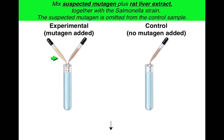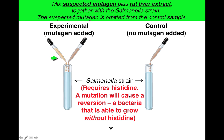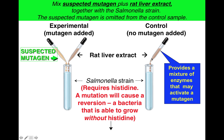This is the test. You start with a strain of salmonella, a bacteria that requires histidine for growth. You mix your suspected mutagen plus a rat liver extract together with the salmonella in a test tube and let them incubate for a little while. The salmonella strain that you're using requires histidine — it cannot grow if you don't add histidine to the growth media. In one test tube, you're mixing your suspected carcinogen with the liver enzymes or liver extract, and your control will just have the rat liver extract and no suspected carcinogen.